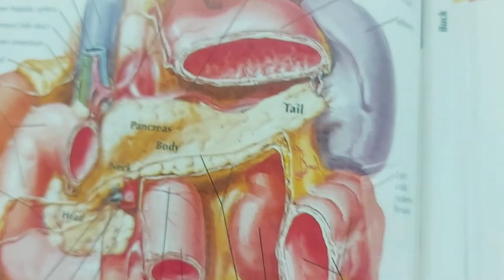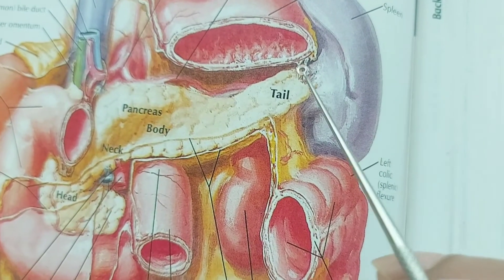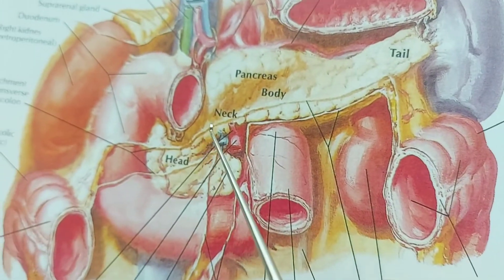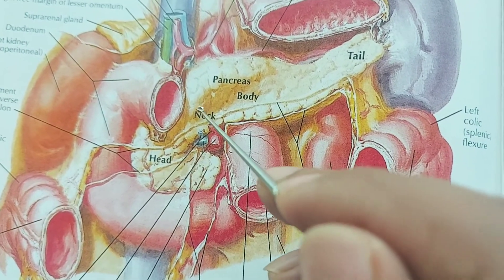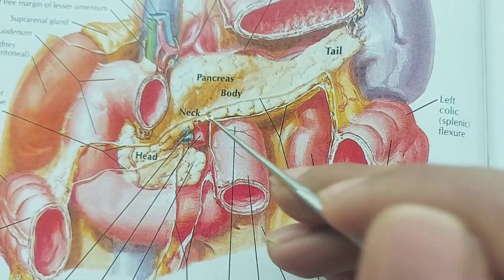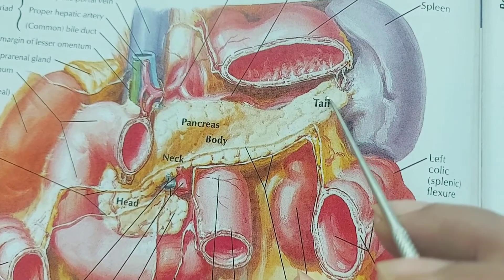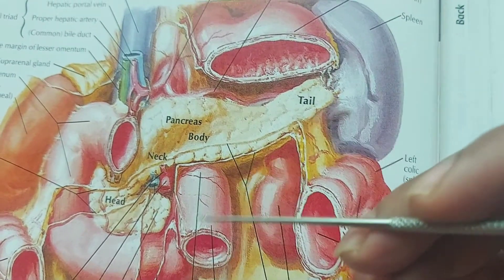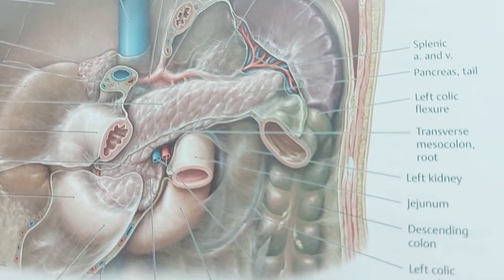The pancreas has different parts. This part is the head of the pancreas, this part is called the neck of the pancreas, this is the body of the pancreas, and finally this part is the tail of the pancreas. The pancreas lies behind the peritoneum, making it a retroperitoneal organ.